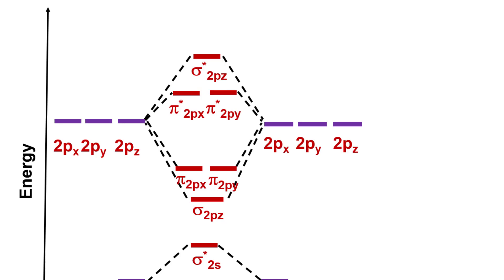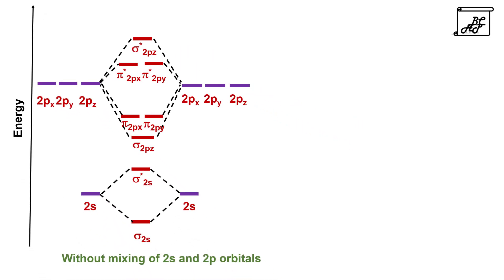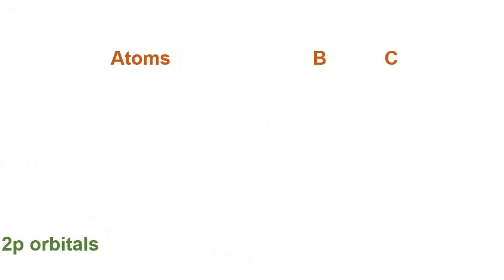This is the general molecular orbital diagram for ns and np atomic orbitals — that is, without mixing of 2s and 2p orbitals. But what happens in the case of the second shell is that the energy gap between the 2s and 2p orbitals is very small, particularly for atoms like boron, carbon, and nitrogen.